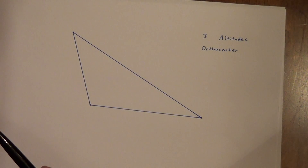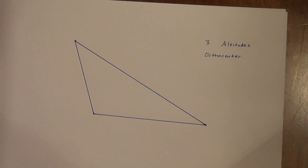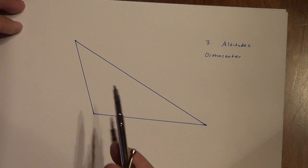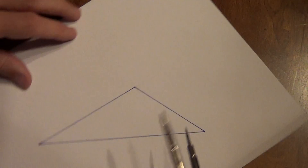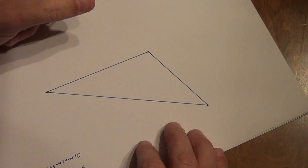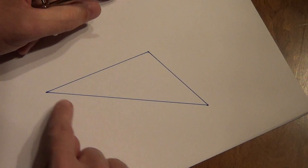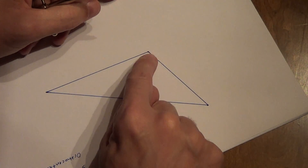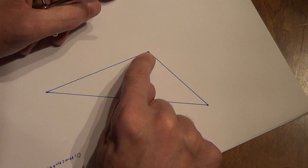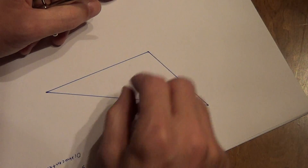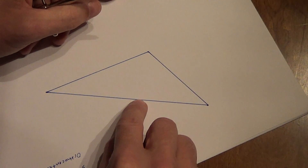Three altitudes: an altitude starts at a vertex and meets the opposite side at a right angle. We've done this compass work before — we have a line, we have a point not on that line. How many lines go through this point? An infinite amount. How many of them are perpendicular to this line? One and only one.